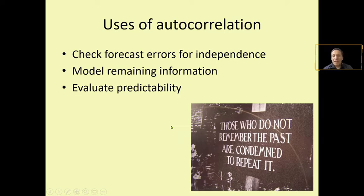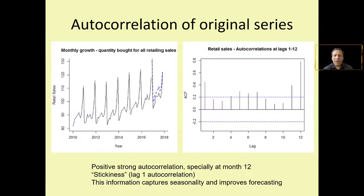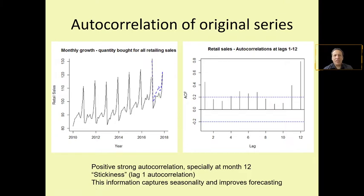Another use of autocorrelation is to evaluate predictability. Here is an example using retail sales. We have the retail sales chart with the forecast in blue — this regression was run in the previous lecture — and in black the validation period. What we want to know is if this time series has autocorrelation. In R, it is very simple: just use a command to find the autocorrelation function (ACF).